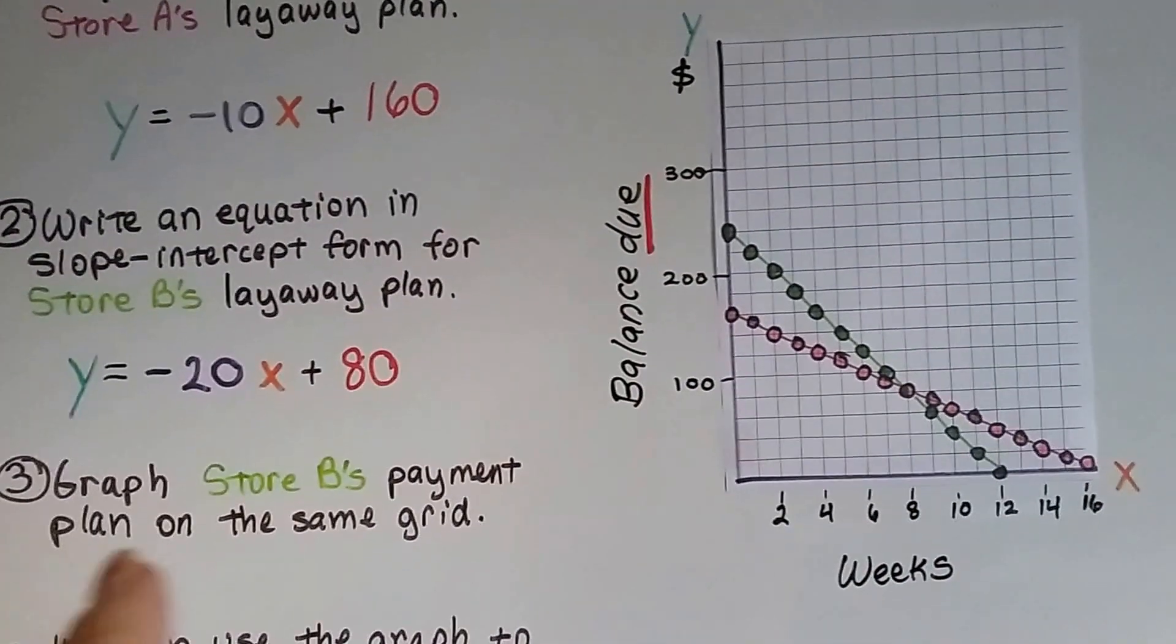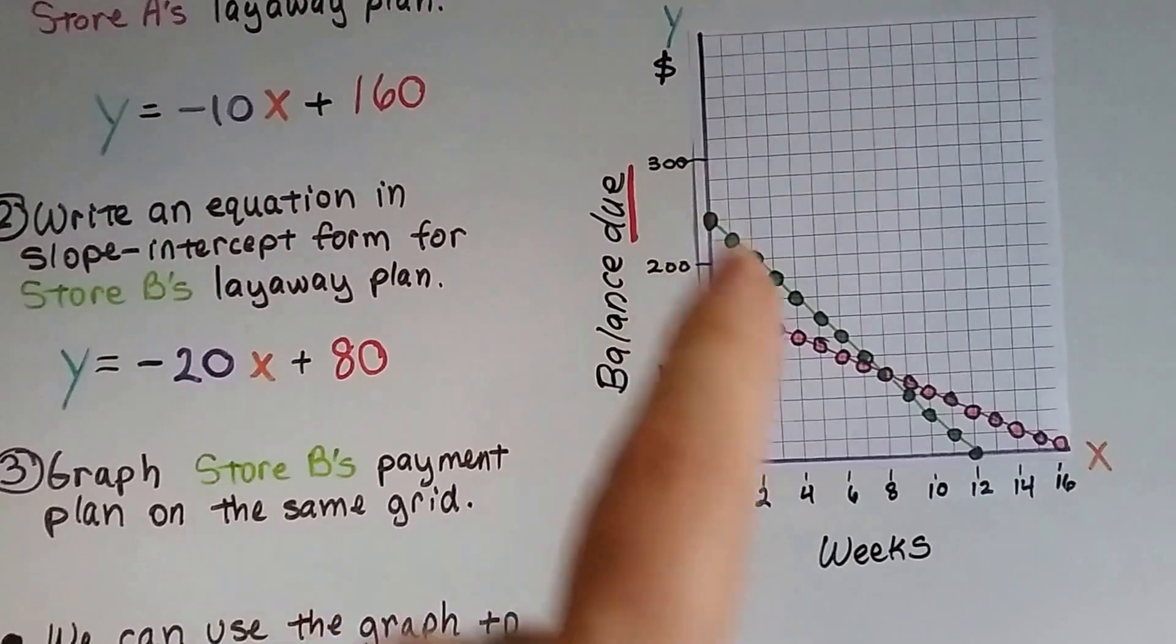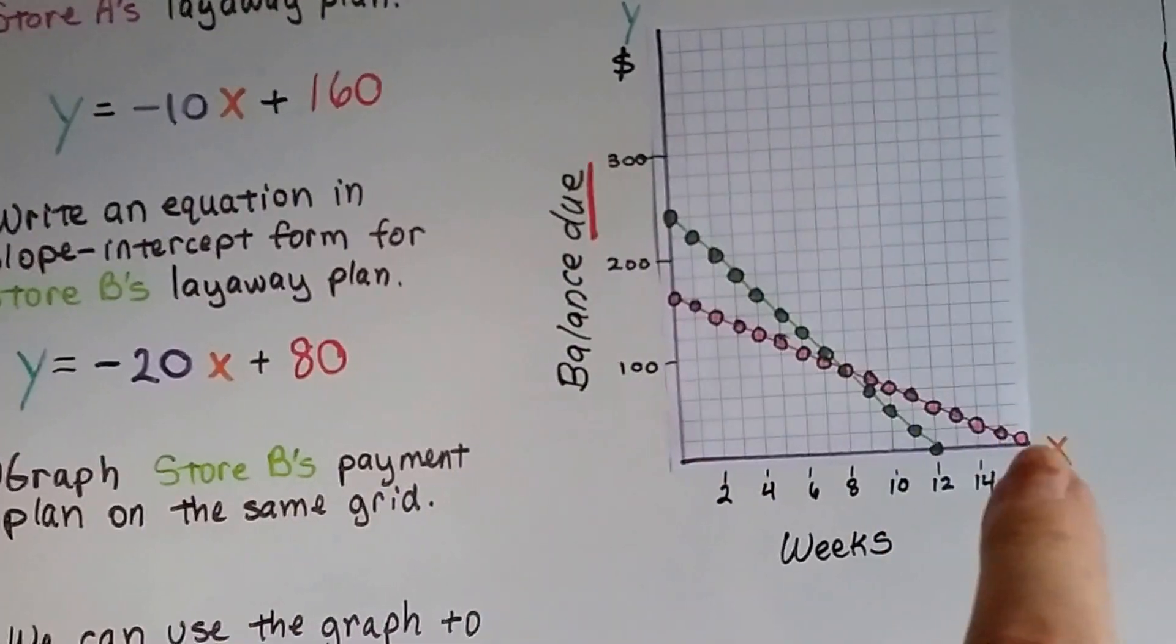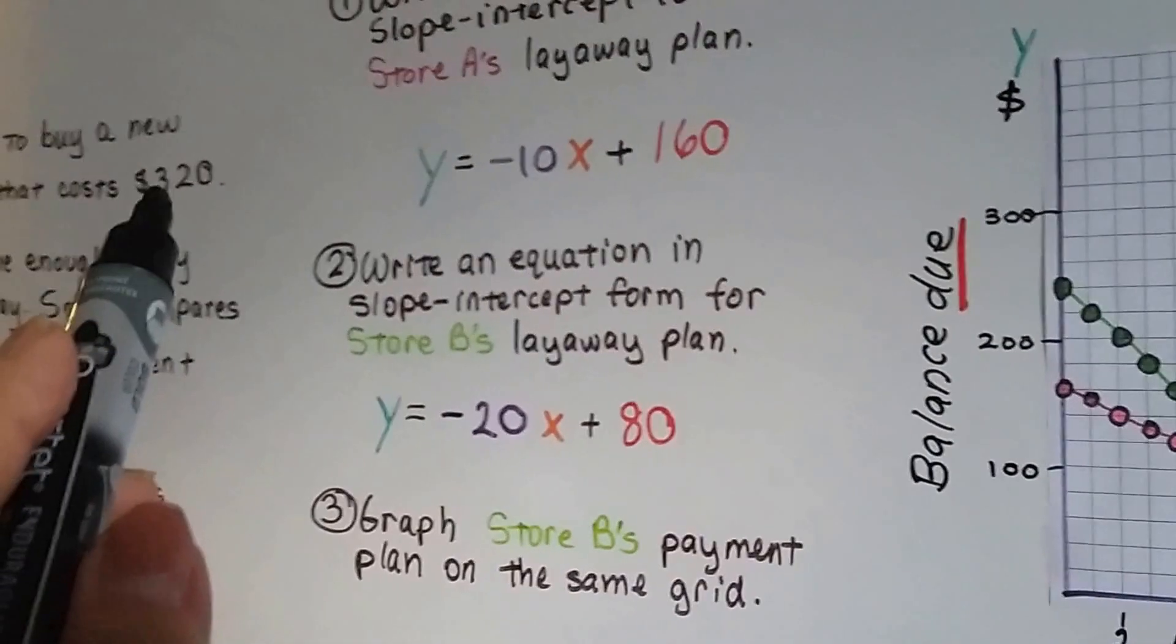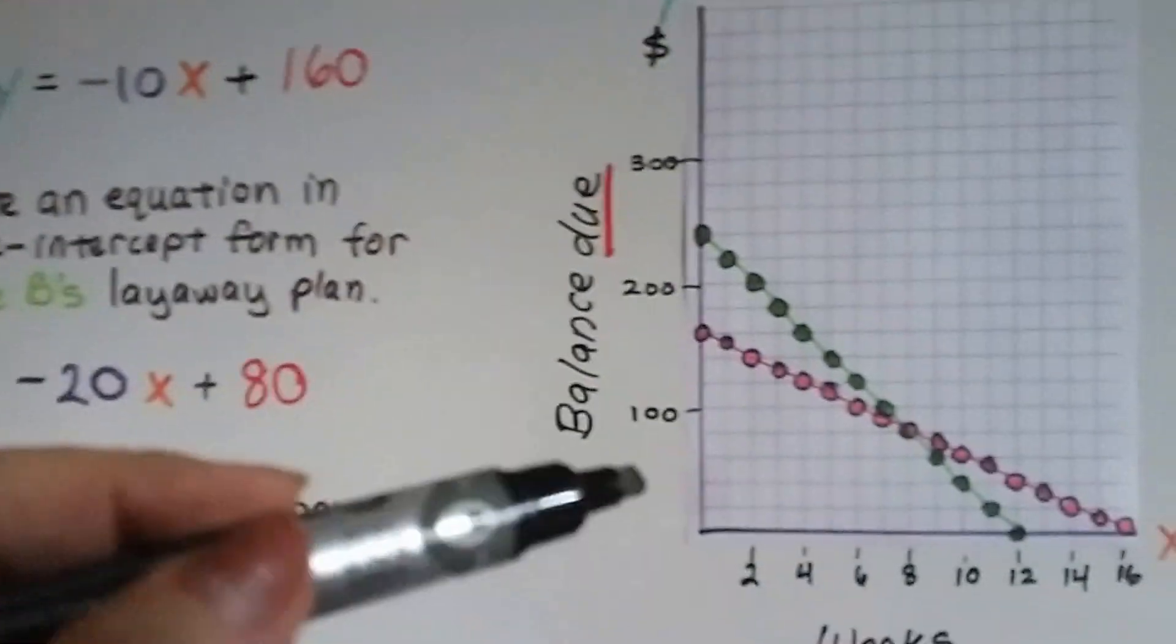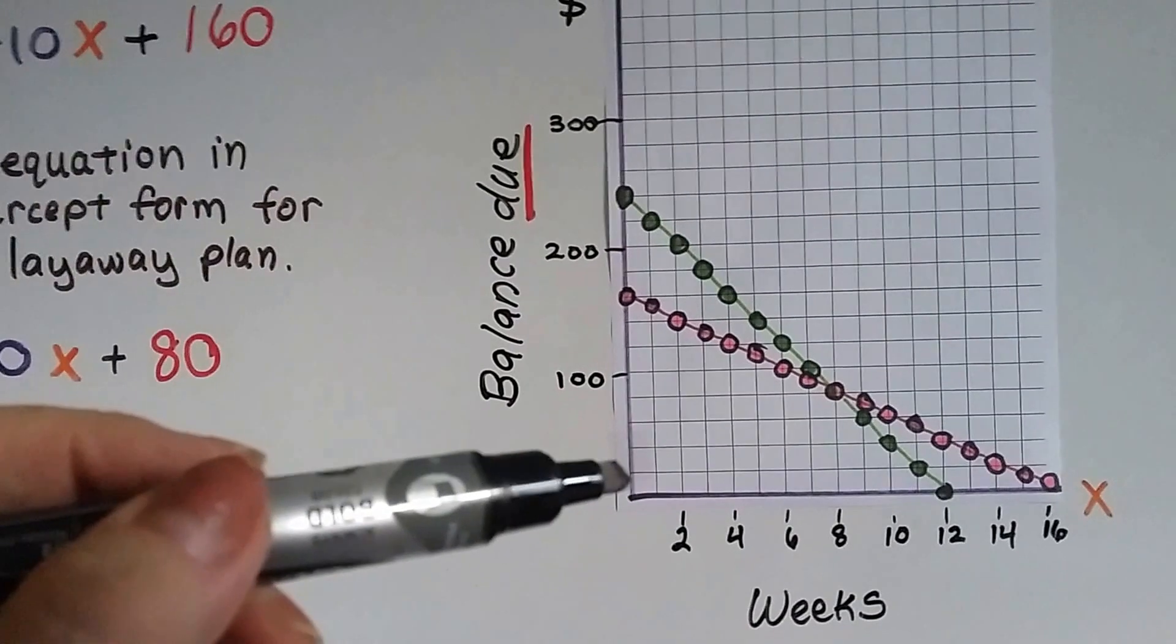So this was store A's plan on the graph in the pink, and it wanted us to graph store B's on top of it. So the pink one was here first, and we can see the values. The game system cost $320.